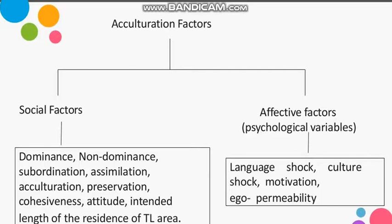I am going to talk about second language learning because when you have a classroom, you have a target of how to teach your target language. Looking at which social factors from society affect your learning, in second language learning we see: dominance, non-dominance, subordination, assimilation, acculturation, preservation, cohesiveness, attitude, intention, and length of residence in the target language area. These are the social factors.